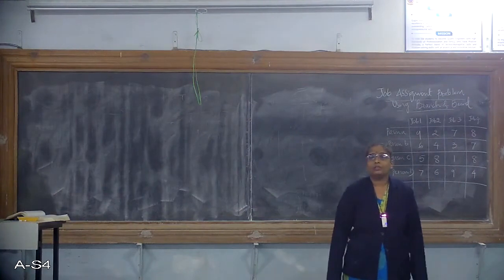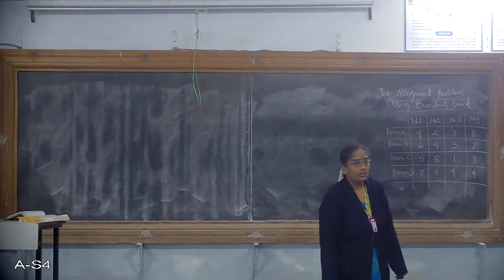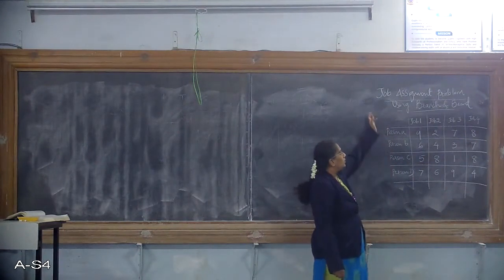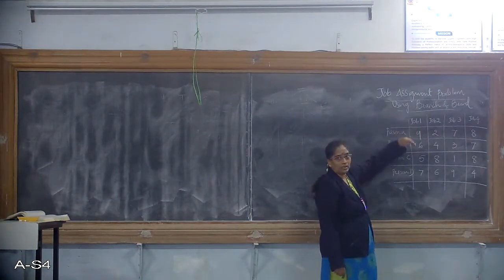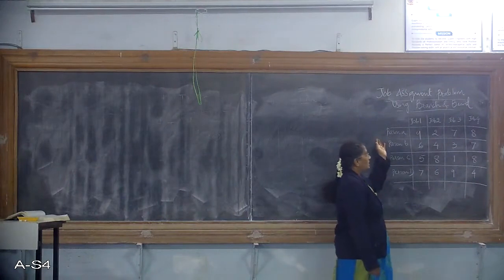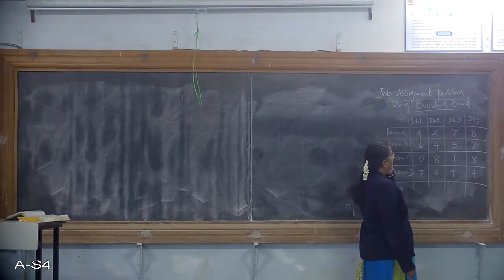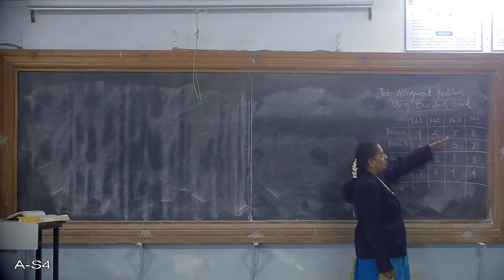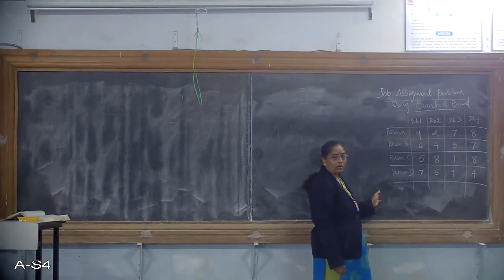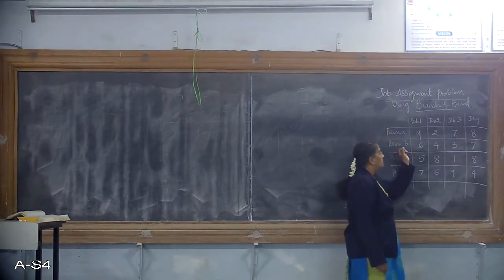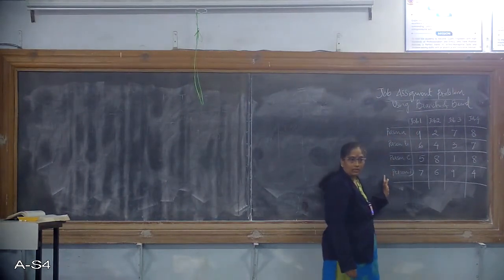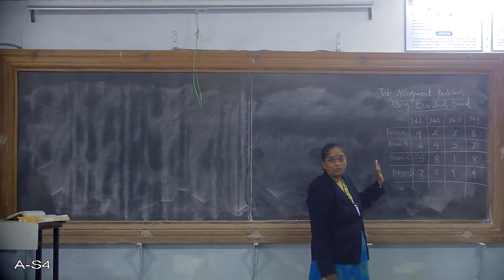Good morning students. Today we'll discuss how to solve the job assignment problem using branch and bound technique. Given n jobs and n people to do the jobs, we need to assign the jobs to each person in such a way that the cost of the assignment should be minimized.